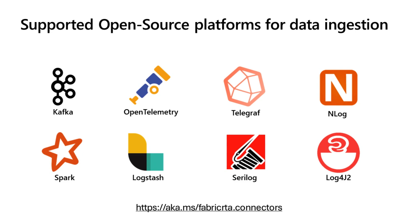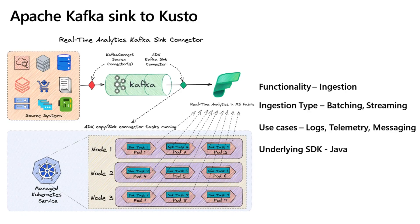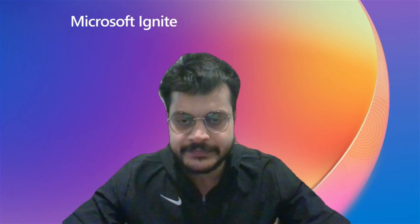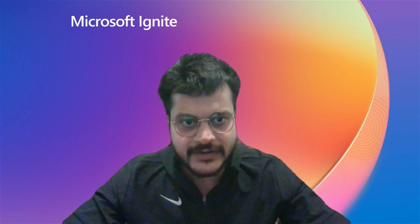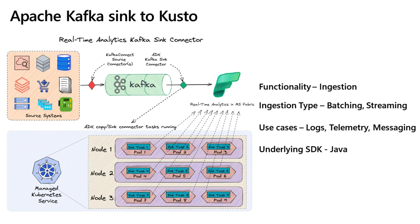Now let's take a look at these connectors in detail, starting with Kafka. You can bring data via Kafka into Kusto using Apache Kafka Kusto Sink, which is built on Kafka Connect — a tool for scalable and reliable streaming of data between Apache Kafka and other data systems. The Kafka Sink serves as the connector from Kafka and is Gold certified by Confluent, having gone through comprehensive review and testing for quality, feature completeness, compliance with standards, and performance. This is an ingestion-only connector that supports both batching and streaming. Customers typically use it to bring logs, telemetry, and messages from servers, IoT devices, databases, etc., for analytics. It is built on Java using the Kusto Java SDK.